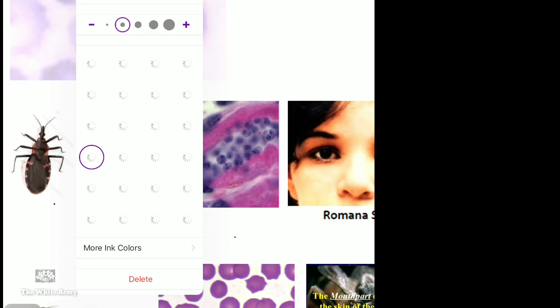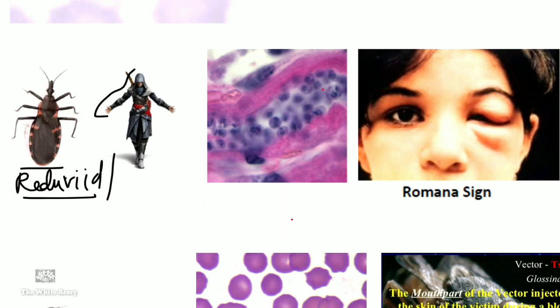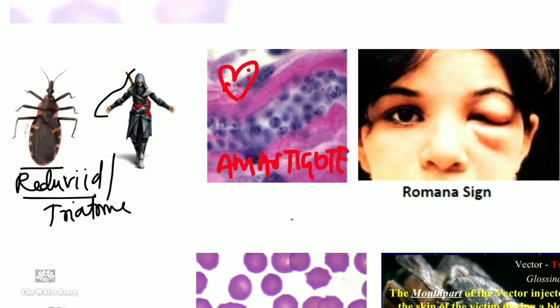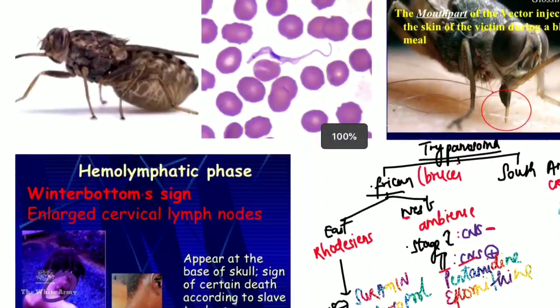Connecting three clues: the assassin bug (reduviid/triatomine bug), amastigote forms seen in the heart, and Romana's sign (unilateral ocular edema). This is Chagas disease — American sleeping sickness, caused by Trypanosoma cruzi. C for Chagas, C for cruzi. Treatment is benznidazole.